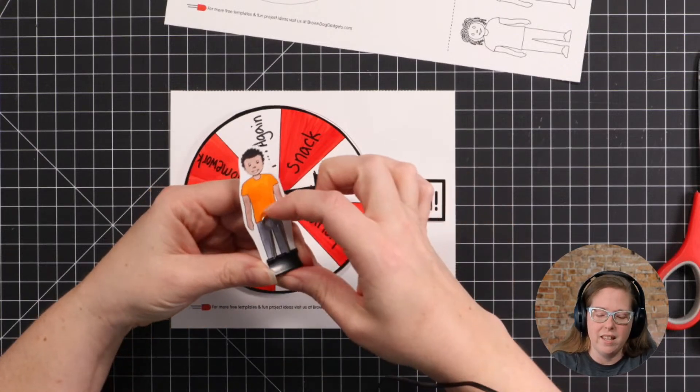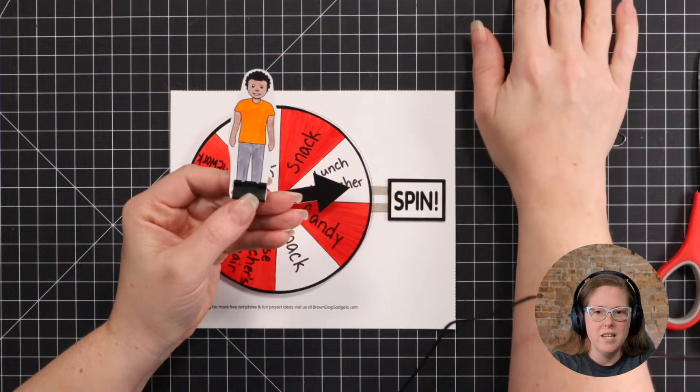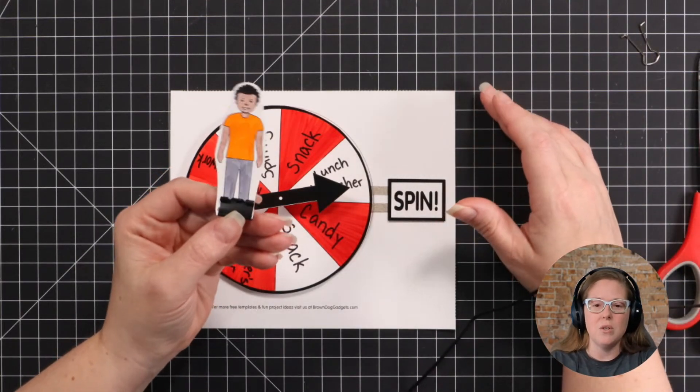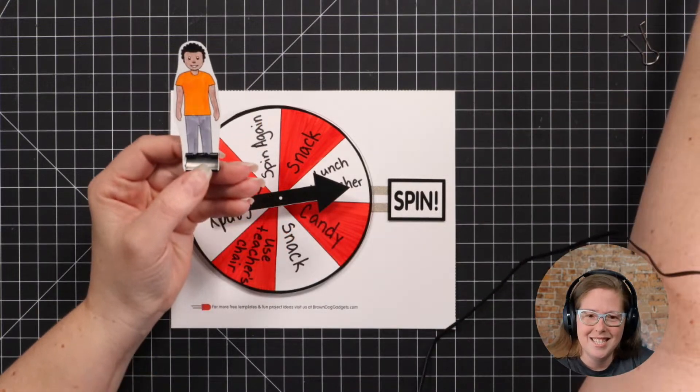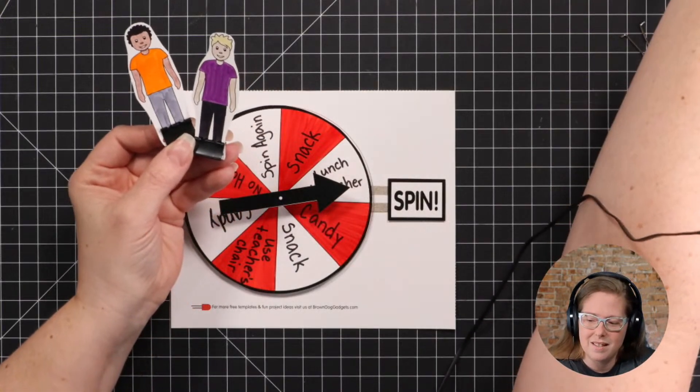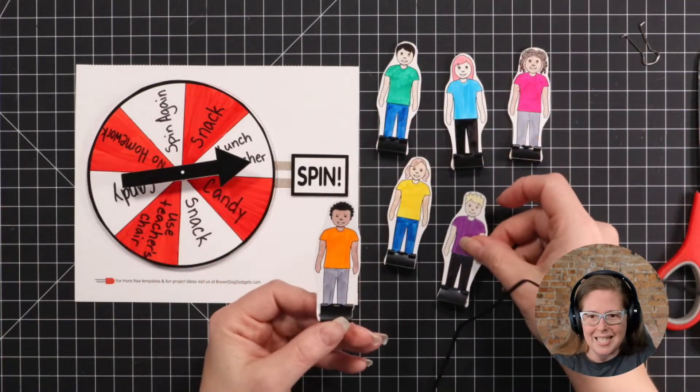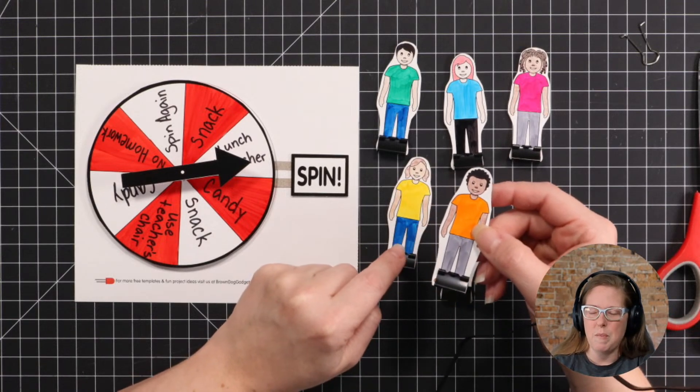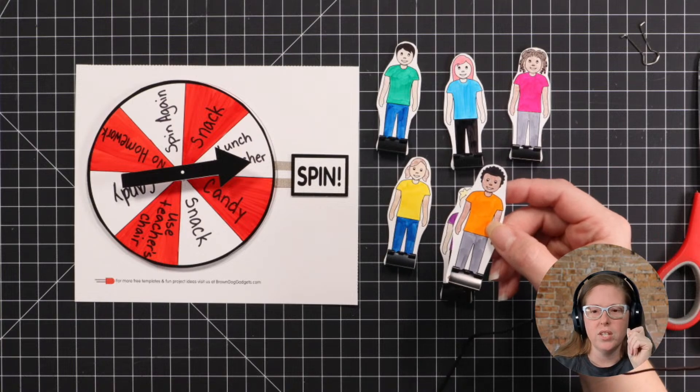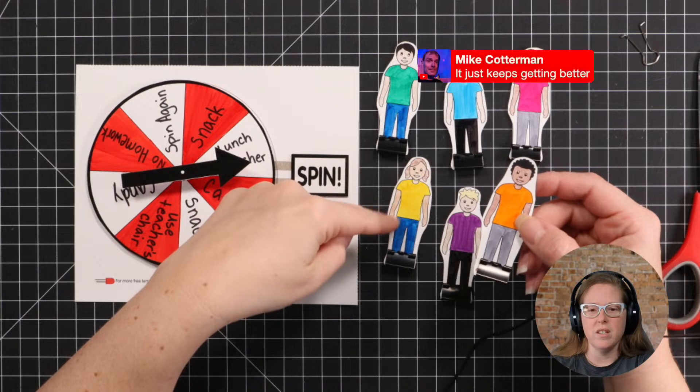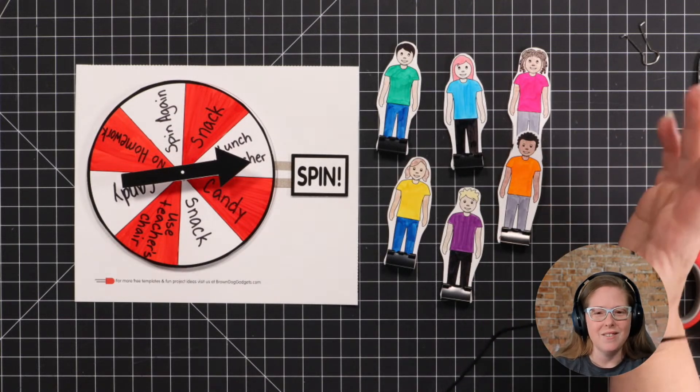Take a binder clip, clip it on the bottom. I like to flip the back side up to give it a little bit more stability. So then you've got your little characters that you can move around your game board instead of whatever the game came with. Or if you're having students actually create their own game, then you've got some characters to play with. That is one of my favorite projects that I've made recently, which is our game spinner.